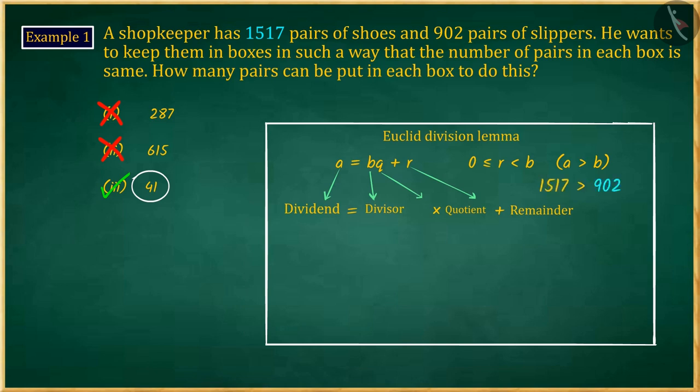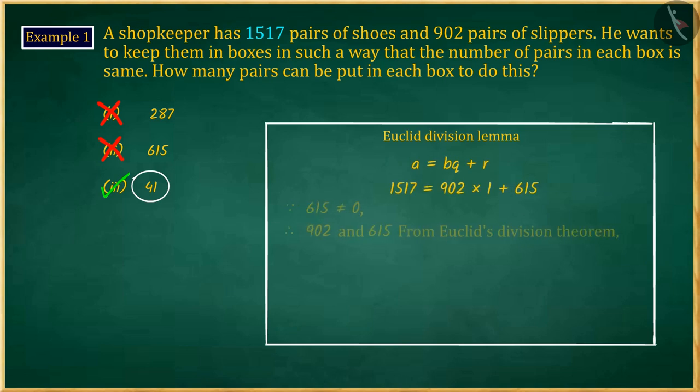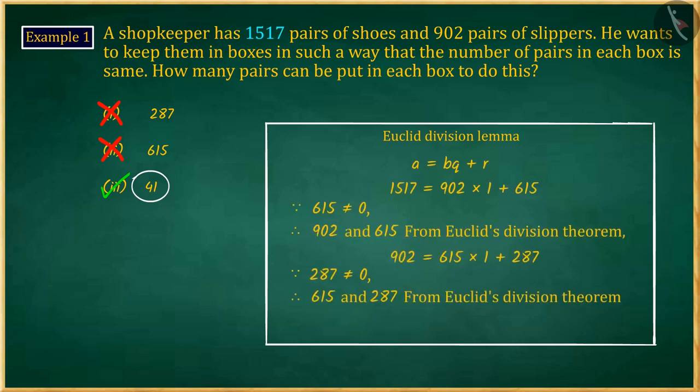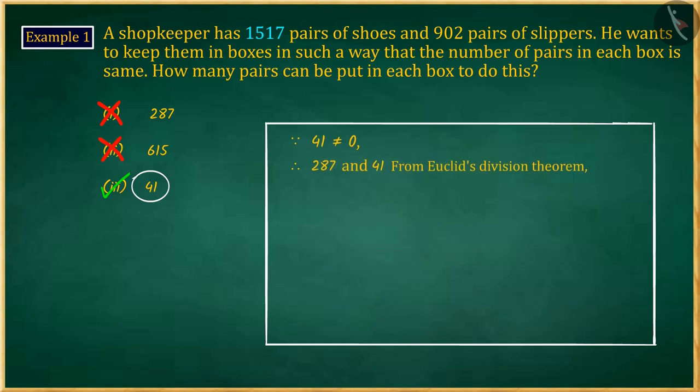Here, 1517 is greater than 902. We repeat the process of Euclid's division lemma until the remainder is 0. Here, we get remainder 0.